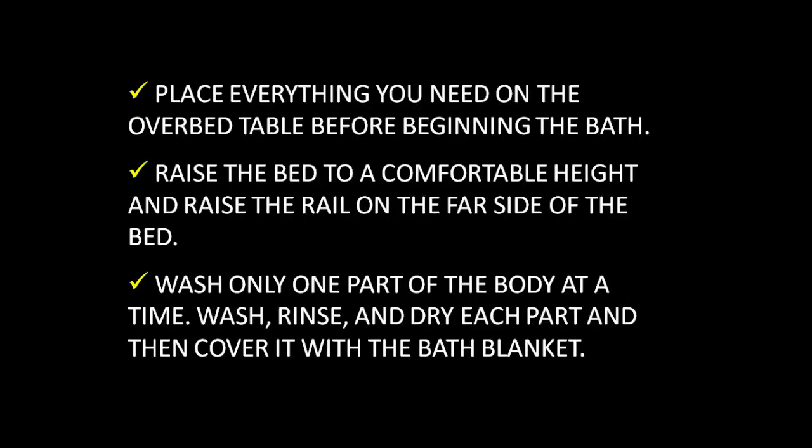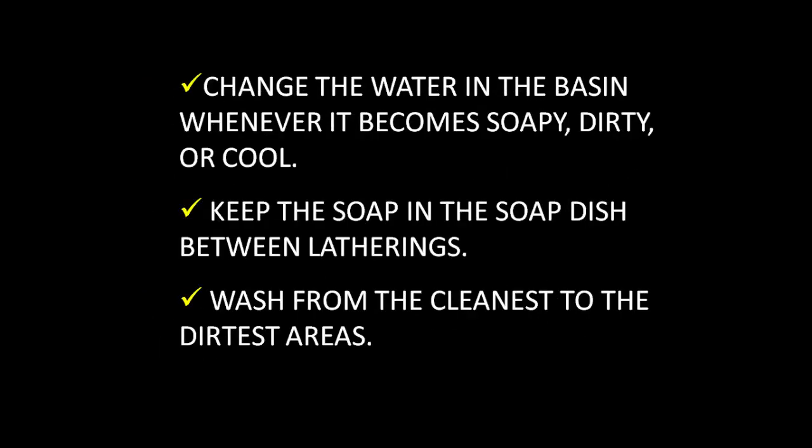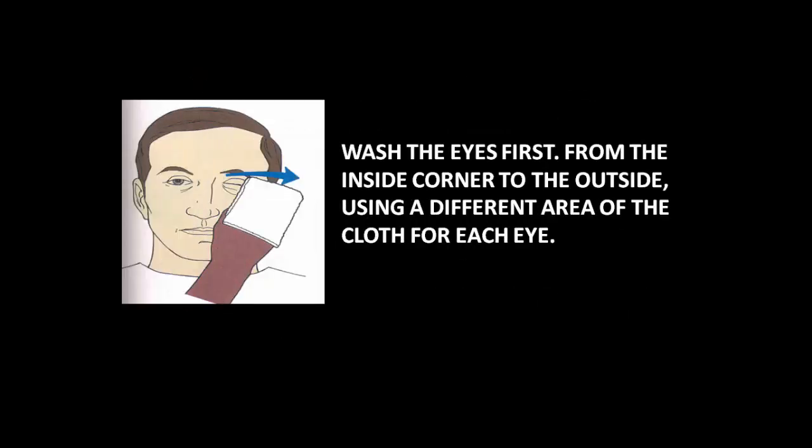Procedure for bed bathing: Place everything needed on the over-bed table before beginning the bath. Raise the bed to a comfortable height and raise the rail on the far side of the bed. Wash only one part of the body at a time. Wash, rinse, and dry each part, then cover it with the bath blanket. Change the water in the basin whenever it becomes soapy, dirty, or cool. Keep the soap in the soap dish between latherings. Wash from the cleanest to dirtiest areas. Wash the eyes first, from the inside corner to the outside corner, using a different area of the cloth for each eye.